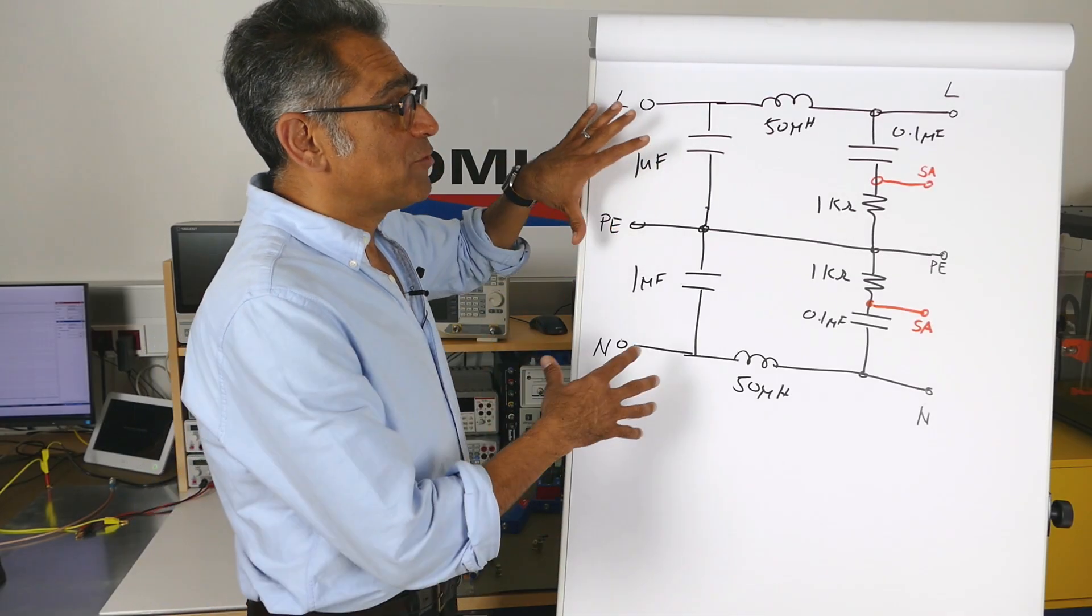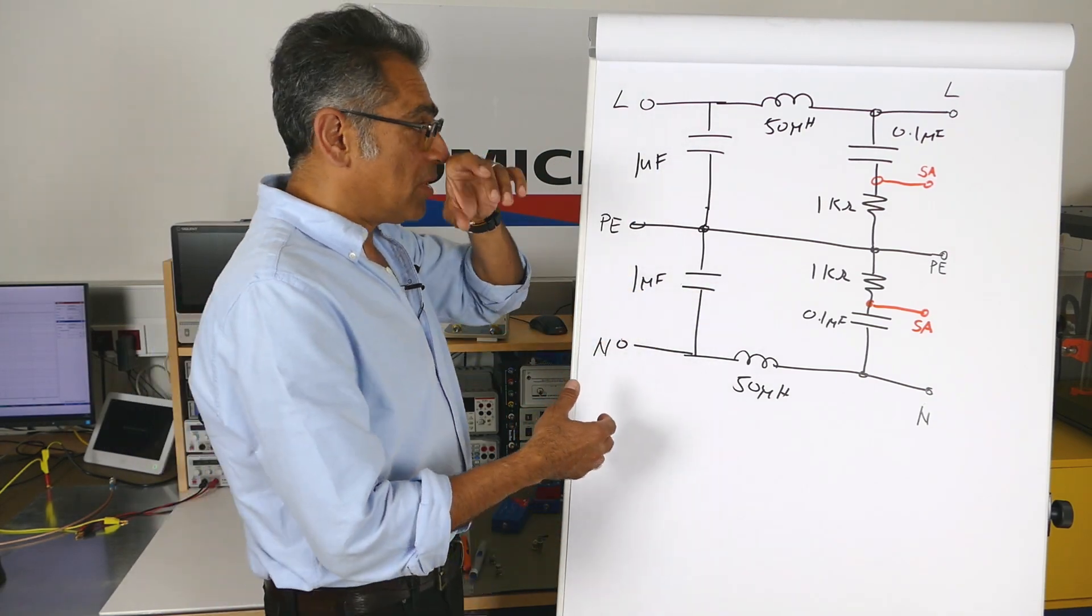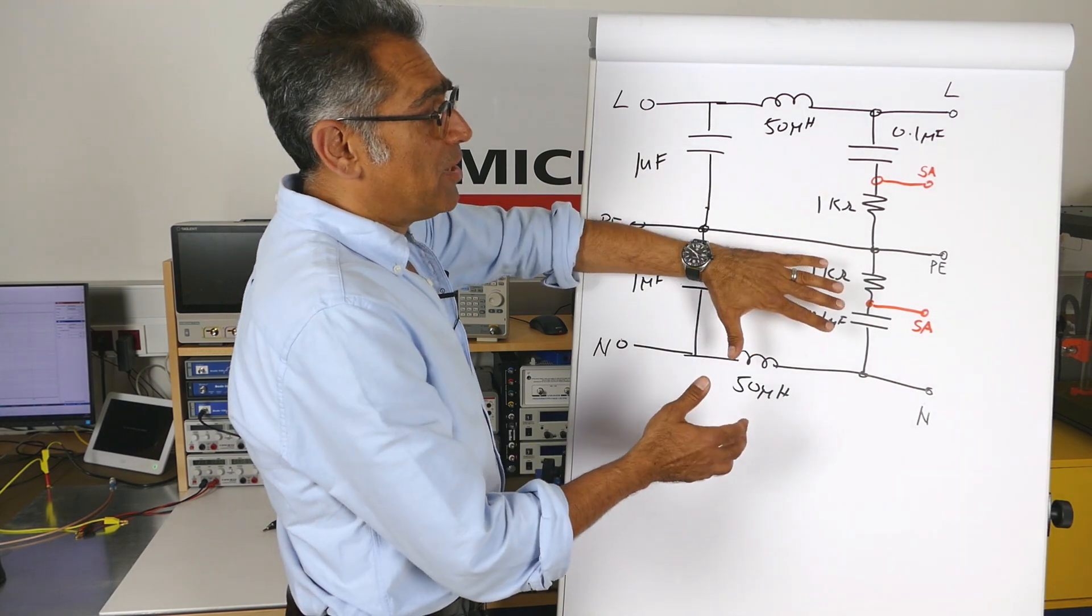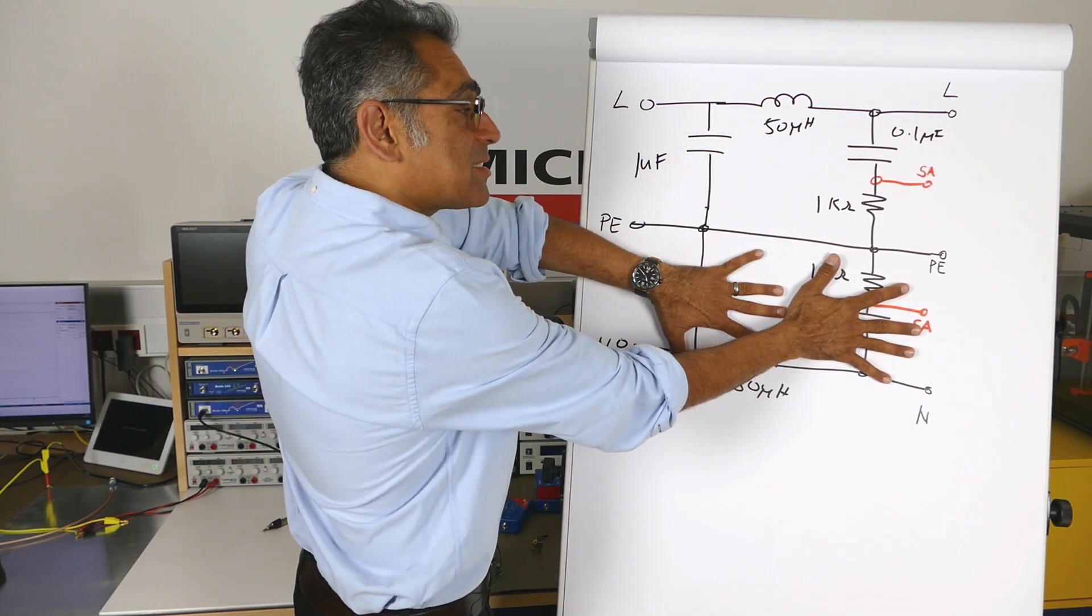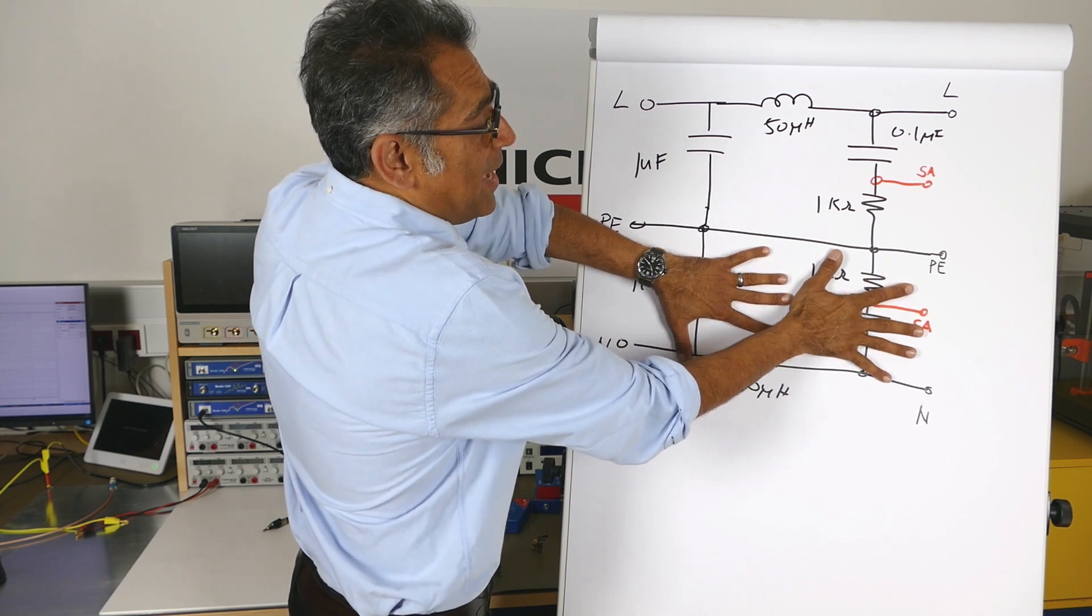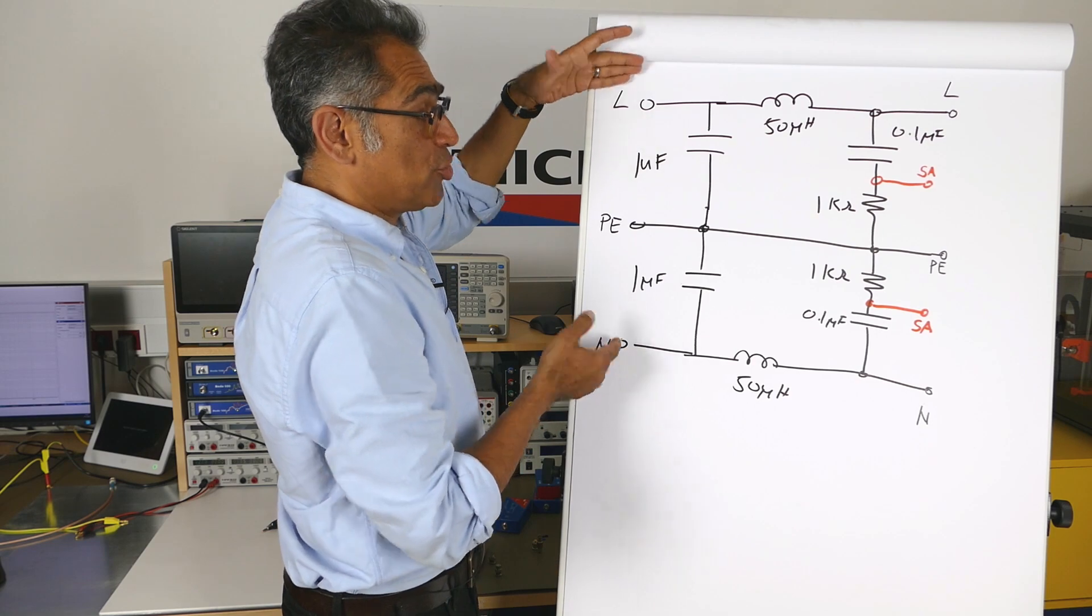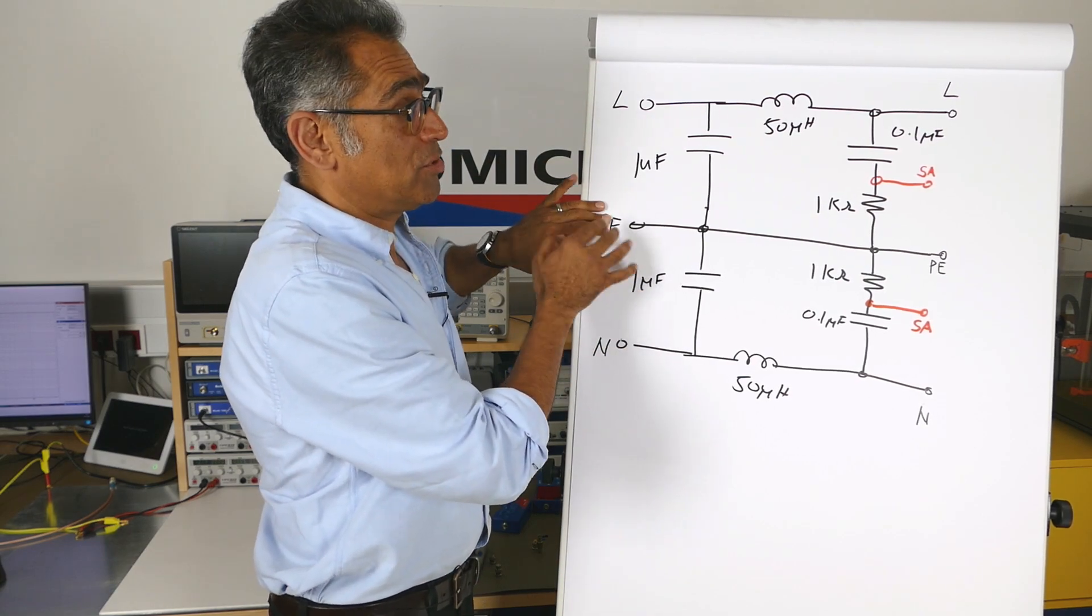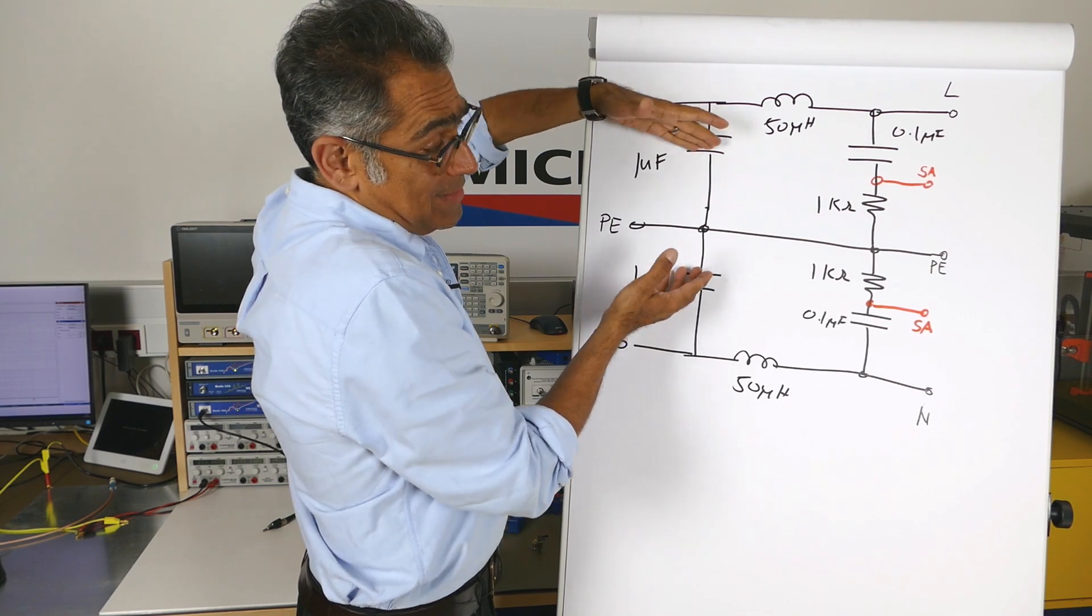So here I have drawn the circuit diagram of our LISN. This is a very simple pre-compliance LISN that we use, and if you're having DC this part does not exist so that'll be a DC LISN. For AC they're symmetrical around so you've got line, you've got neutral and you've got your protected earth or chassis. You have got two microfarad capacitors. This is symmetrical.